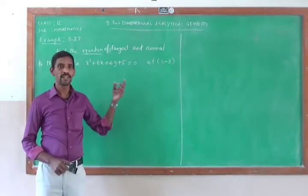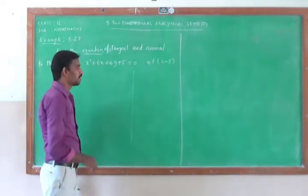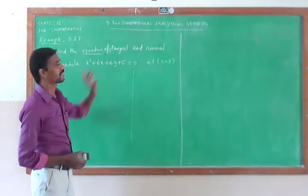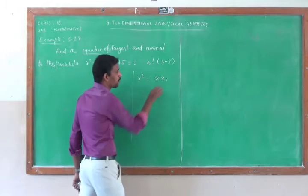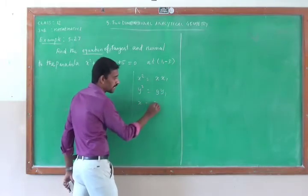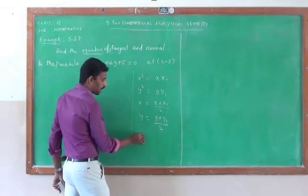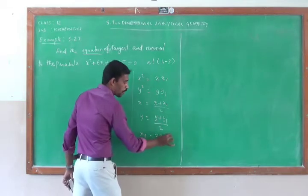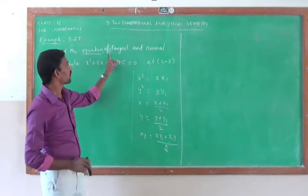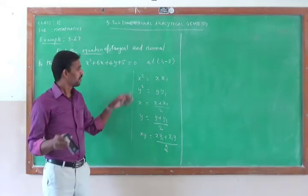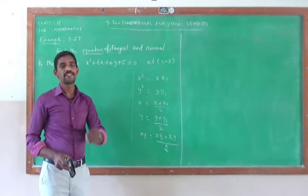We have a separate formula for finding the equation of tangent and normal. But as I already told in the last class, without the formula we can find it easily. For the equation of tangent, by substituting x squared as xx₁, y squared as yy₁, x as (x plus x₁) divided by 2, y as (y plus y₁) divided by 2, and xy as (xy₁ plus x₁y) divided by 2. So without using a separate formula for tangent and normal to the parabola, whatever curve we can use x squared as xx₁ and following this, we can find the equation of tangent easily.